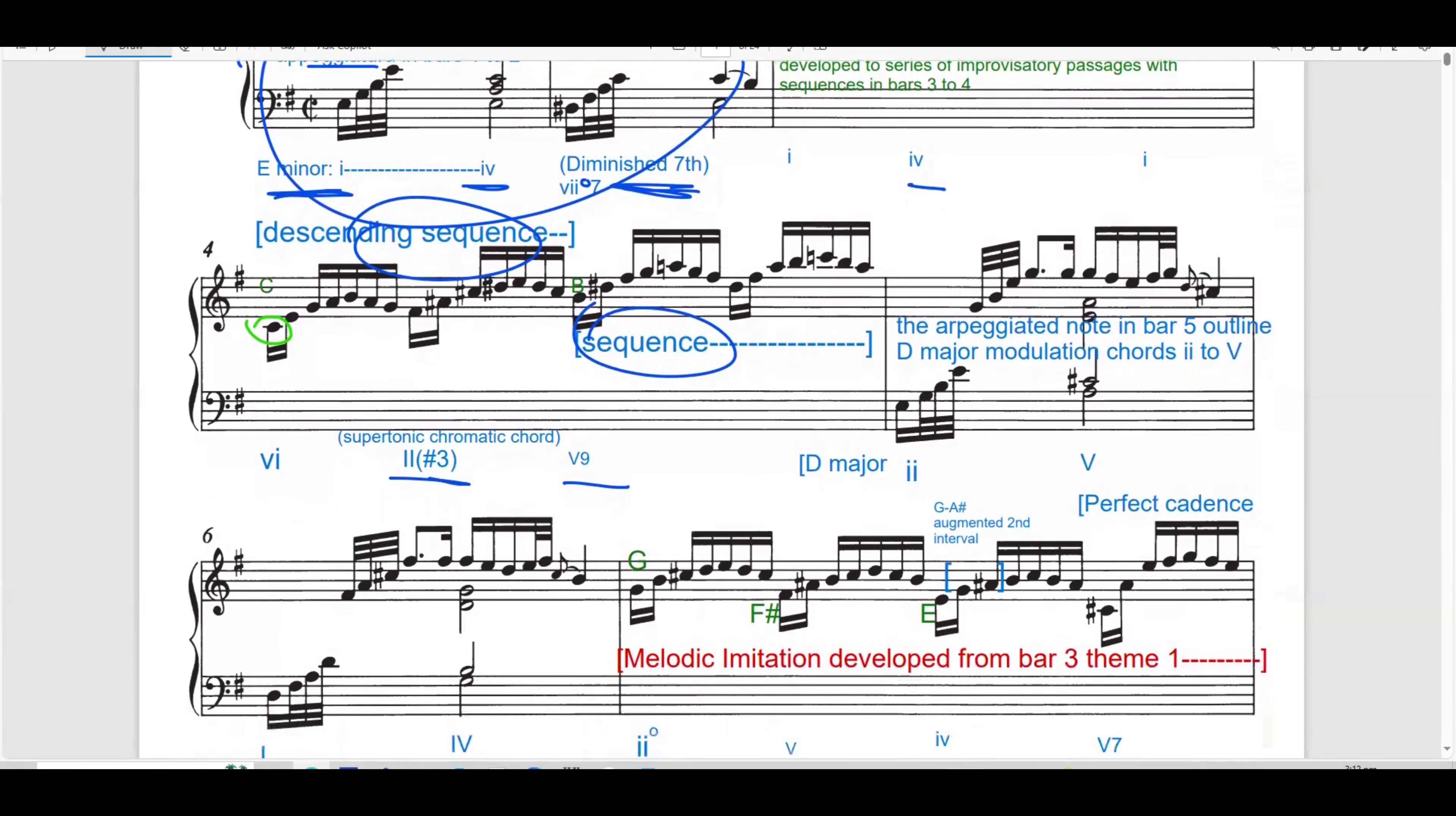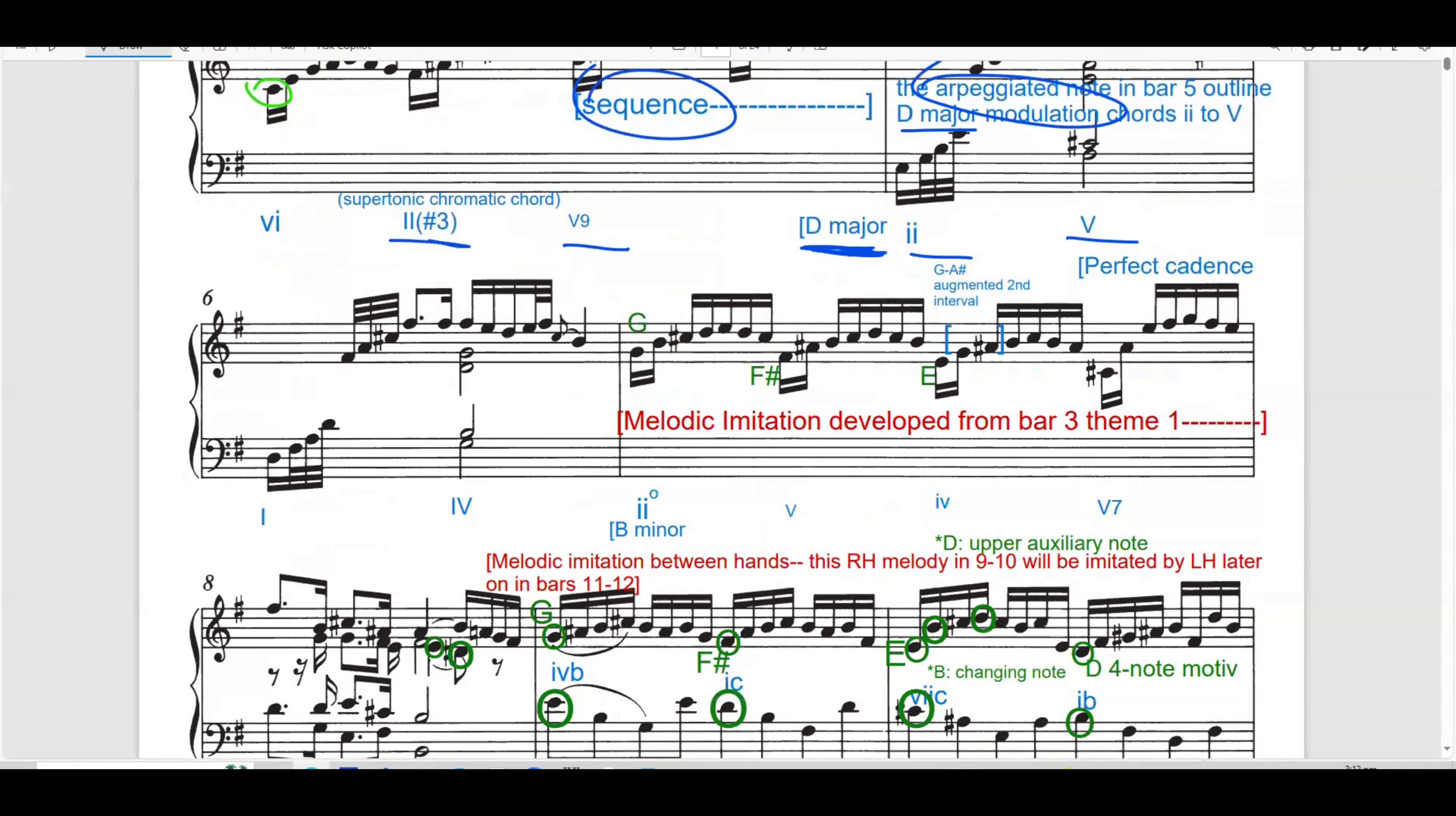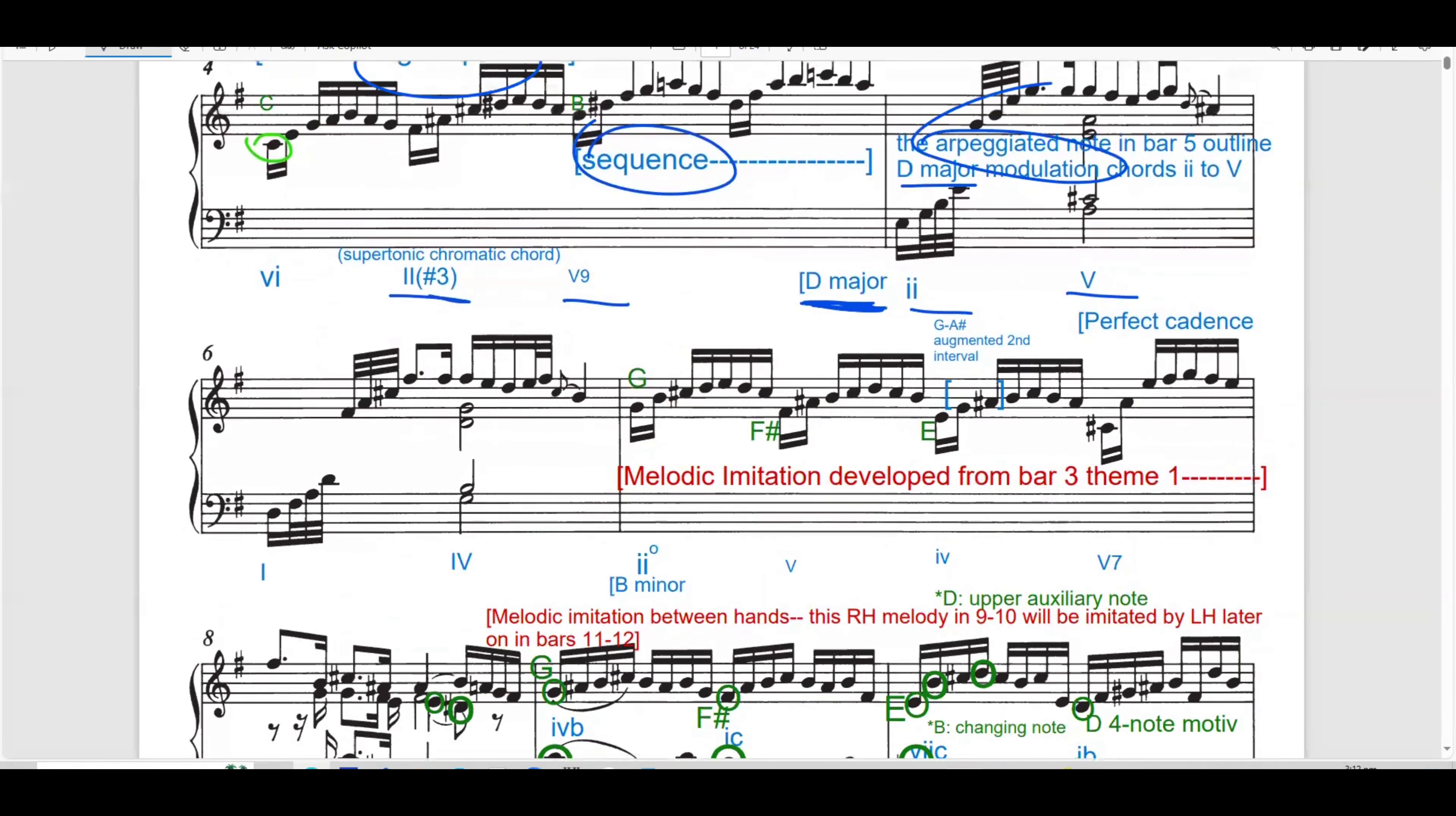The right hand flows in semiquaver sequences, while left hand provides harmonic support. Creates a two-voice texture. Each phrase is carefully balanced, maintaining the counterpoint despite the rapid movement. In bar 5 to 6, the arpeggiated notes outline the modulation to D major.